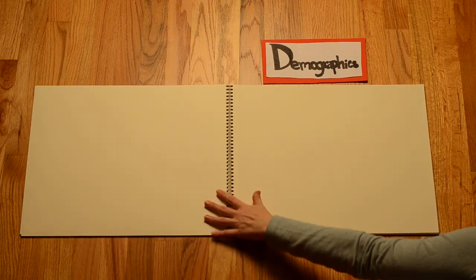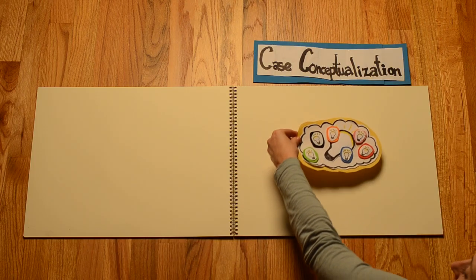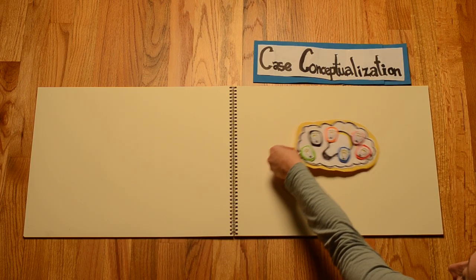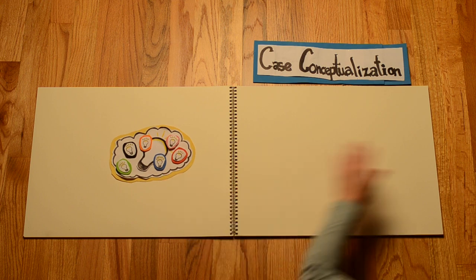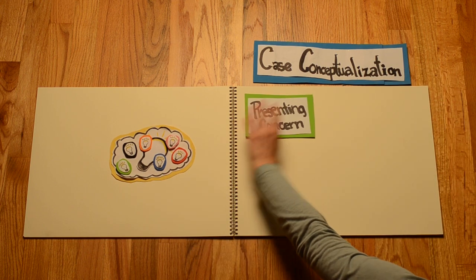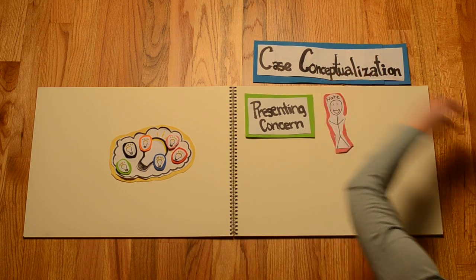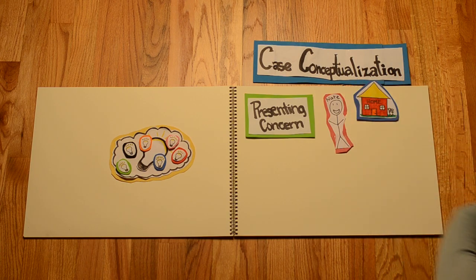Okay, so that is a lot of information to hold online at once. Let's put it off to the side for a moment and think about the presenting concern. Nate stated at his initial therapy appointment that he was having some trouble transitioning from living at home with his parents to living on his own at college.